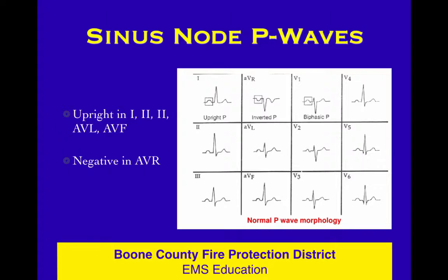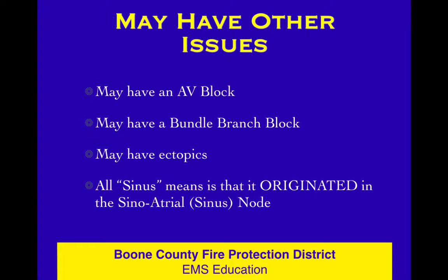Here's a picture showing that. Notice on the right side in the chest leads — the precordial leads — you'll have a biphasic P wave. The biphasic P wave is not abnormal in V1 or V2, but really the definition is based on the left side, the limb leads. It is upright in 1, 2, 3, AVL, AVF and it is inverted in AVR. You can have a sinus rhythm with an AV block, a bundle branch block, conduction system delays, or extra ectopic beats that come in early and look weird. All sinus means is that it came out of the SA node.